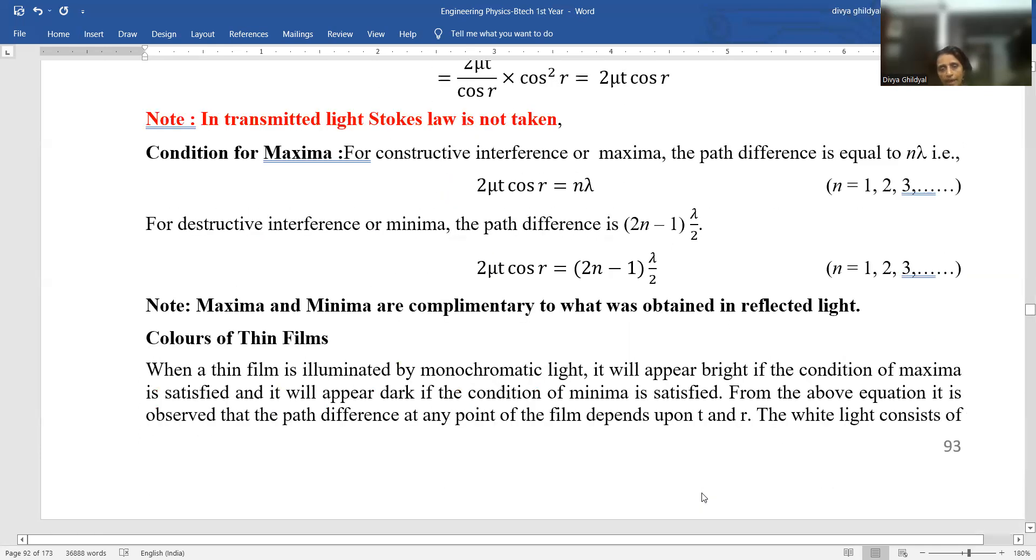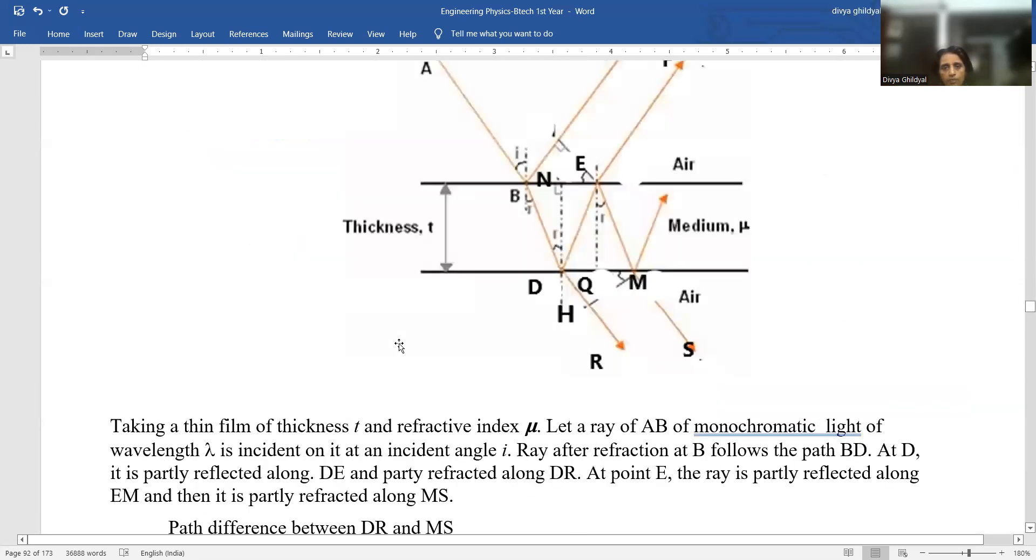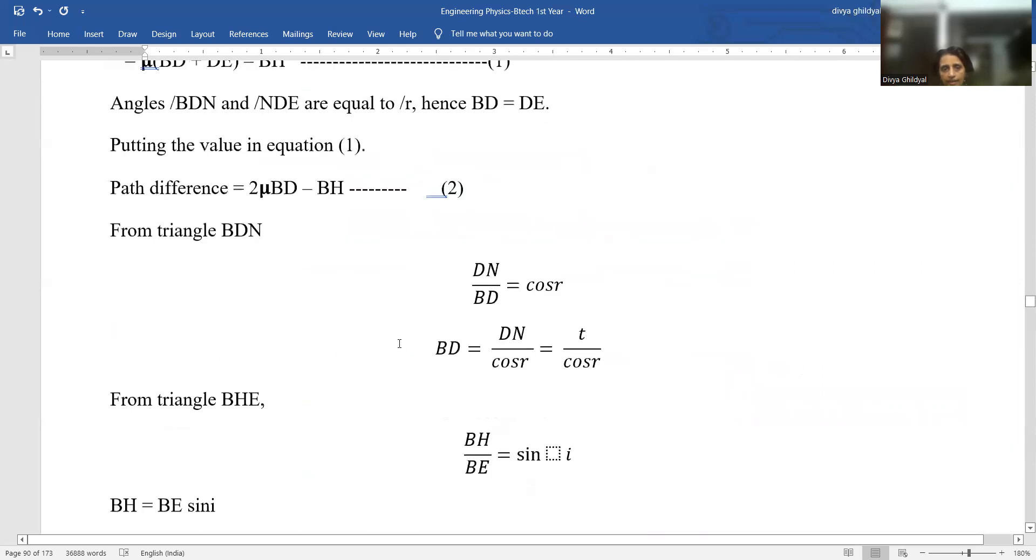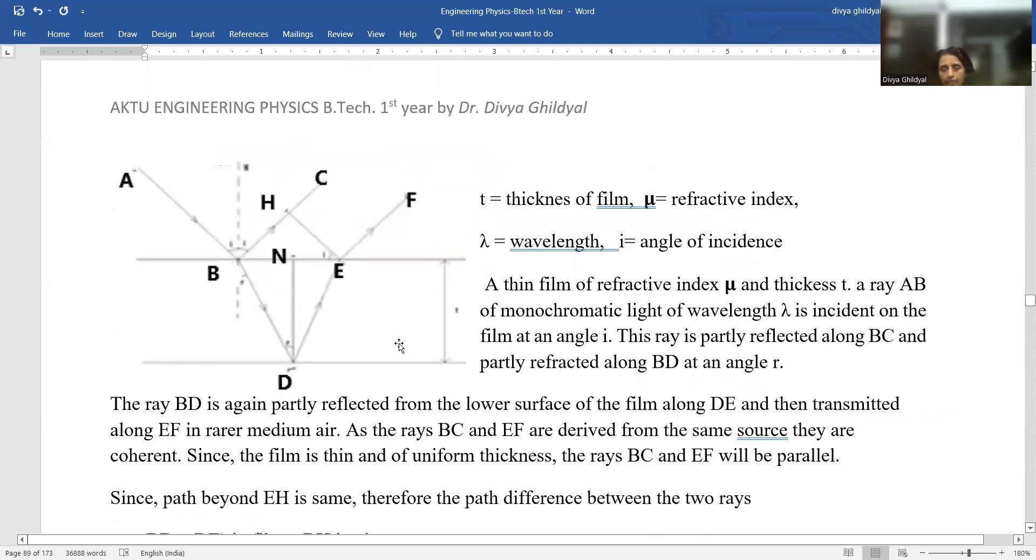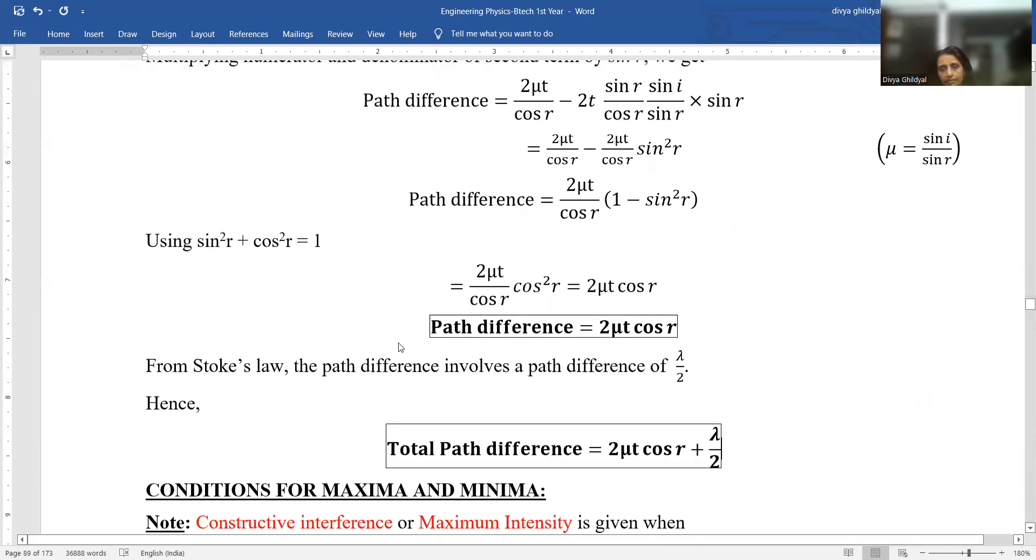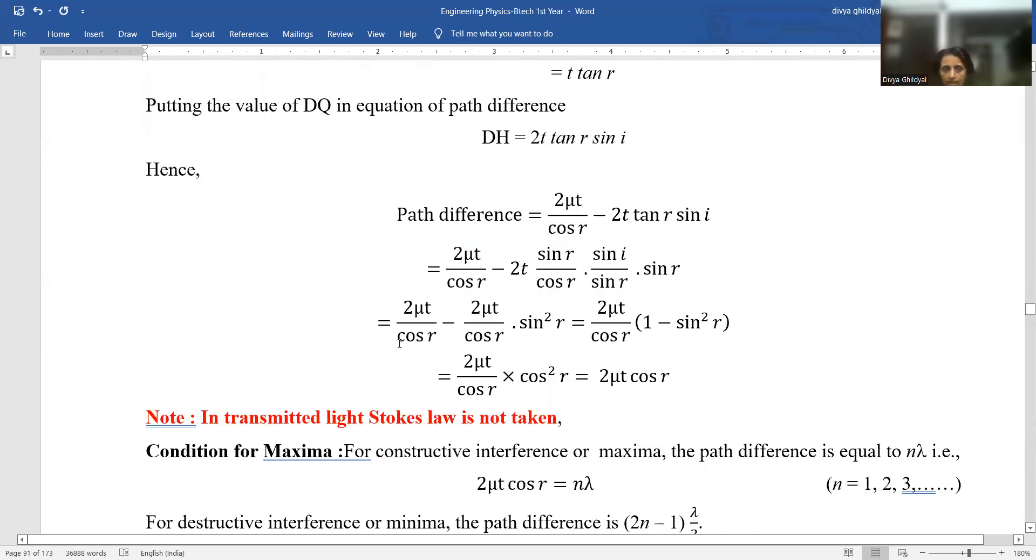We get the conditions for maxima and minima. Now in your AKTU paper, 10 mark question in section C is asked for derive an expression for path difference due to thin film of uniform thickness in reflected light. This comes as a 10 mark question. What is asked in section A?